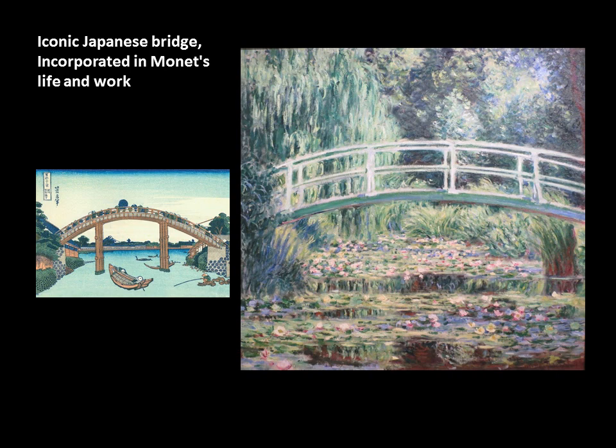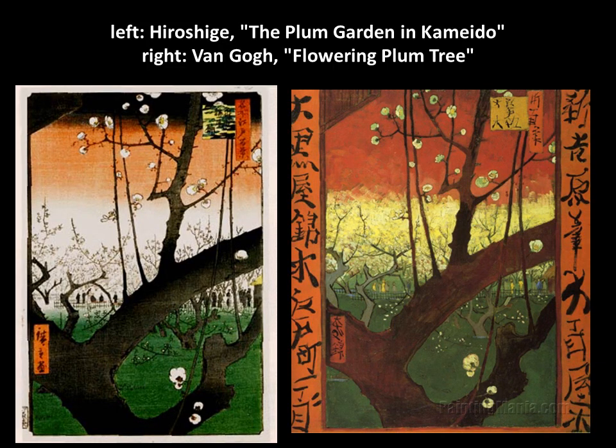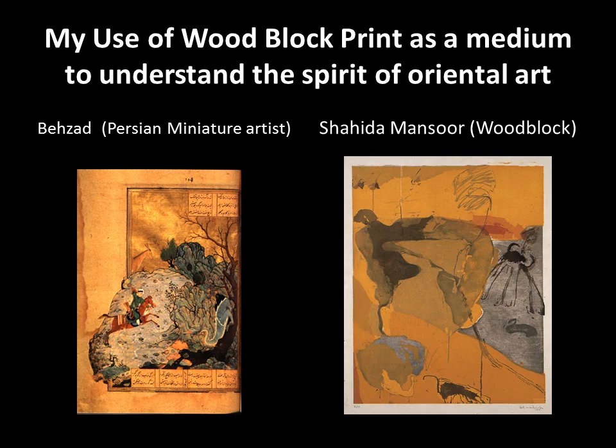Impressionism as well as Post-Impressionist artists embraced the mysterious world of Japanese art as a tool of capturing memory and imprinted impressions, creating fresh ways of communication and expression — as one can see in the example of the iconic Japanese bridge incorporated in Monet's life and work. Similarly, Van Gogh, on the right, copied Hiroshige's The Plum Garden at Kameido, while searching for freshness in his expression.